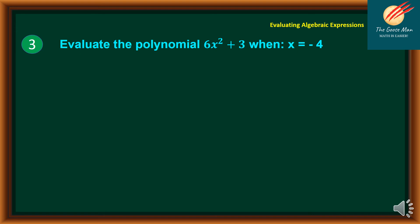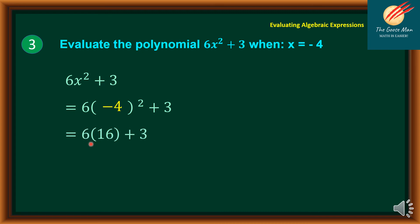Let's move on to the next example. Evaluate the polynomial 6x² + 3 when x is equal to negative 4. Write down the expression 6x² + 3, replace the variable x with parentheses, then plug in negative 4. Note that (−4)² gives us 16. So we have 6 times 16 plus 3. 6 times 16 gives us 96, plus 3 equals 99. Therefore, the final answer is 99.